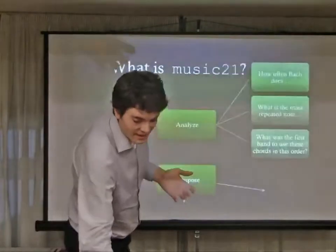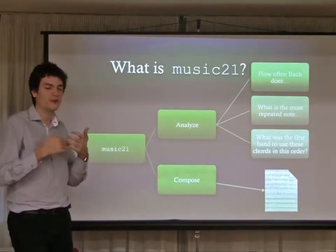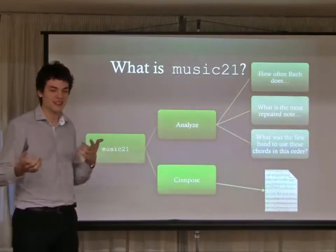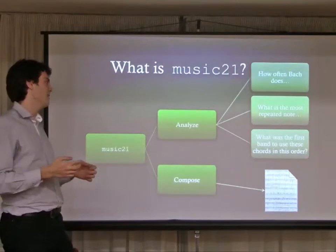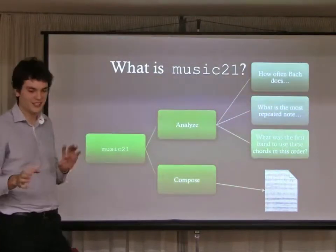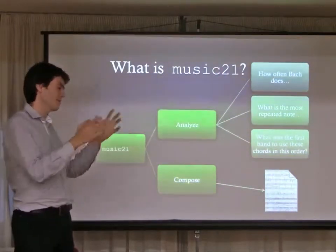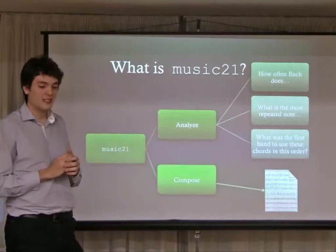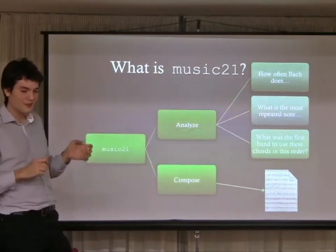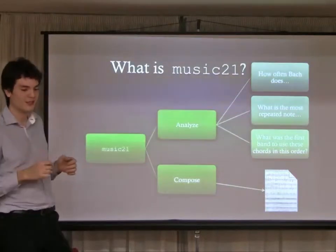For example, what is the most repeated note in a song? Well, you could take a song, count the notes, and say this one is the most repeated. But what if I ask: what is the most repeated note by Schumann or some other composer? The answer is not that fast. You can get these answers just by programming one or two lines of code with Music21, because it analyzes all the scores you want and gets the solution very fast.